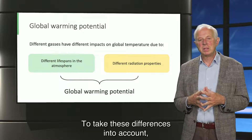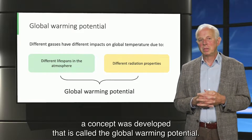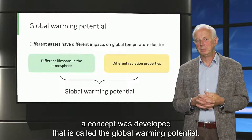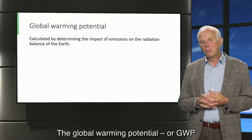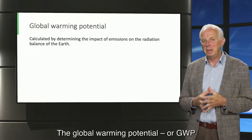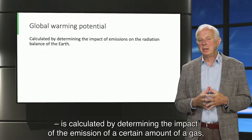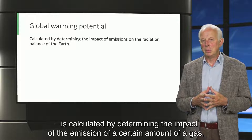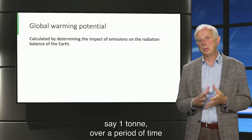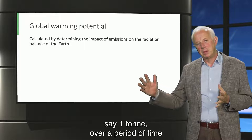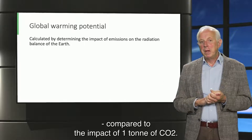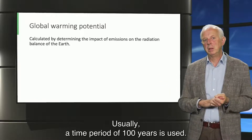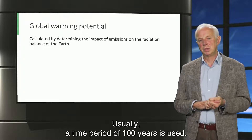To take these differences into account, a concept was developed that is called the global warming potential. The global warming potential, or GWP, is calculated by determining the impact of the emission of a certain amount of gas — say one ton — over a period of time, compared to the impact of one ton of CO2. Usually, a time period of 100 years is used.